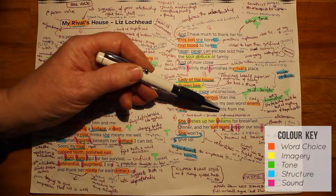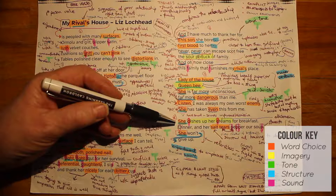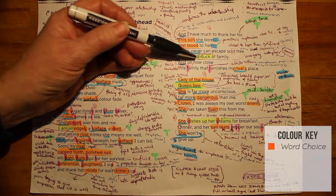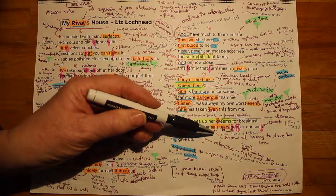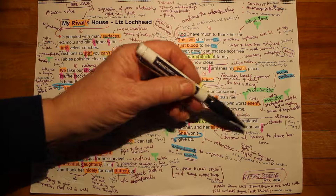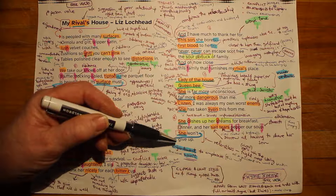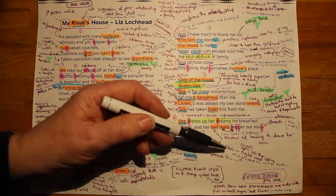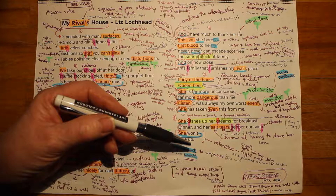In stanza six, sound is used effectively again with the alliteration of the harsh D sound in 'dishes up her dreams for breakfast.' This imagery picks up on the food imagery earlier with sour potluck. At dinner, her salt tears — the word choice suggests the hostess is sorrowful at having to share her son. The short staccato P sound in 'pepper our soup' adds to the impression of tears dropping into the soup, though this is imagery. The last two lines are particularly powerful: 'she won't' — with a fabulous enjambment emphasising the won't — 'give up.' We get a feeling of relentlessness, as if it's a war of attrition, and the impression that the persona fears the rival will win because she is so persistent.